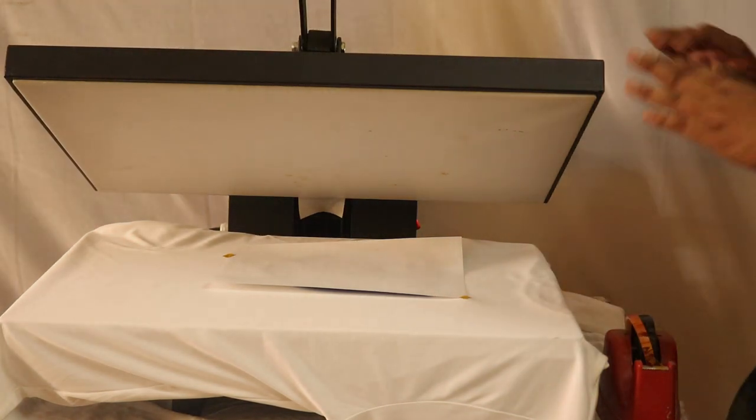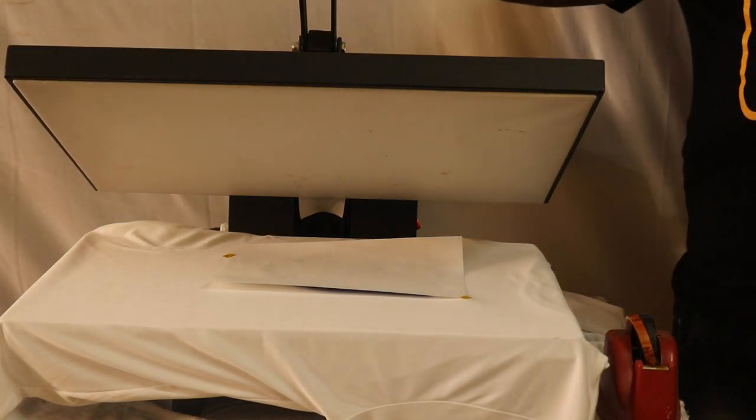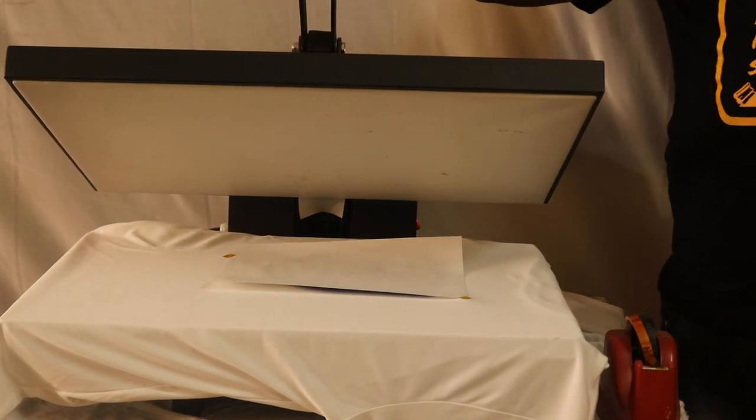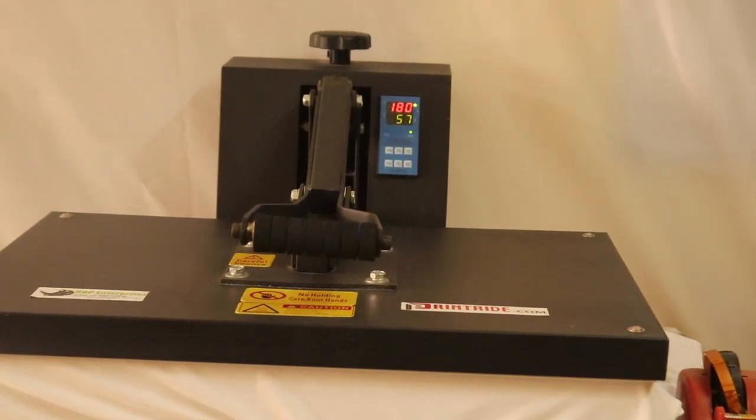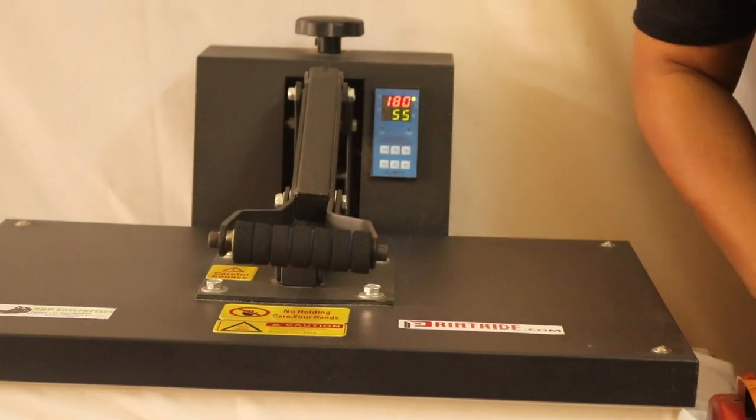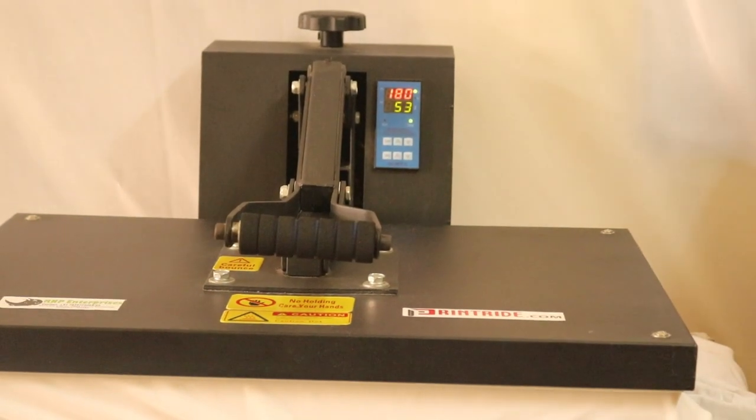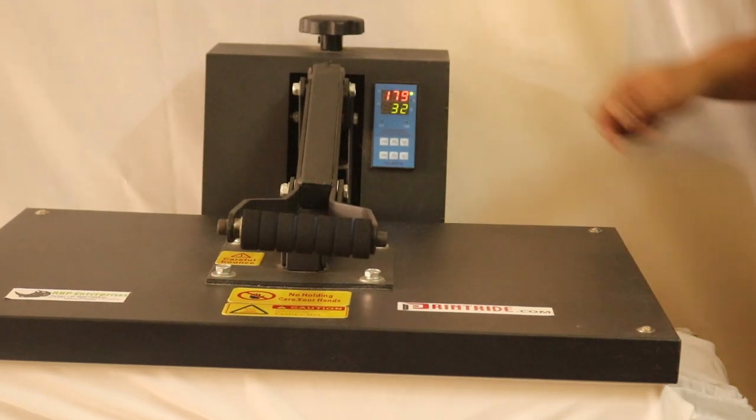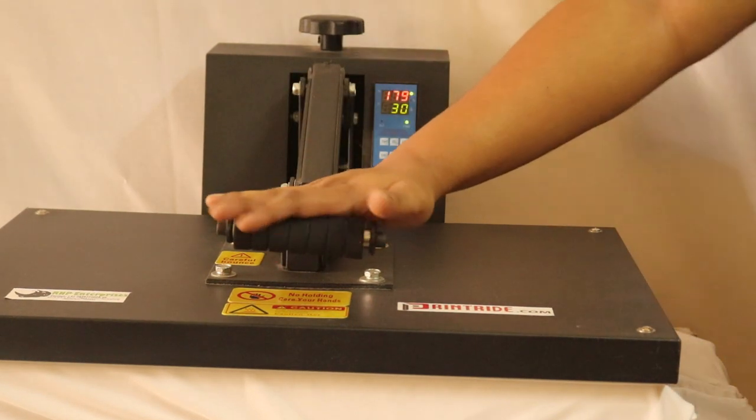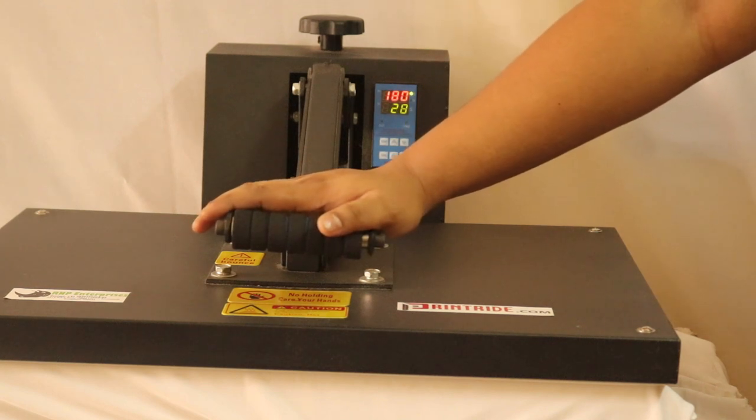After you put the tape you have to press it for 60 seconds. Now we have pressed it for 60 seconds. So after 60 seconds the t-shirt will be ready to take out. The print will be pressed there.